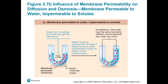Looking at the diagram: we have more water and fewer solutes on one side, and more solutes and less water on the other. Water still wants to establish equilibrium and get equal amounts on both sides. After movement, we have a lower volume of water on the side with fewer solutes, and higher volume of water on the side with more solutes — and this is a selectively permeable membrane where solutes cannot move through.